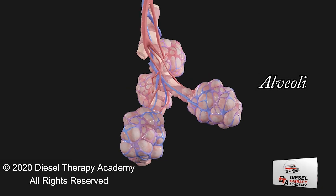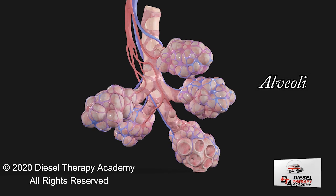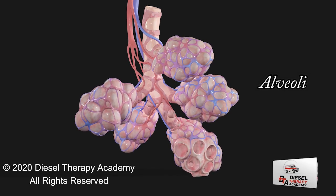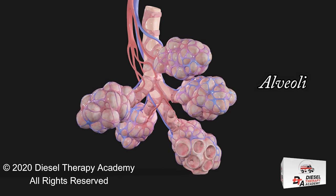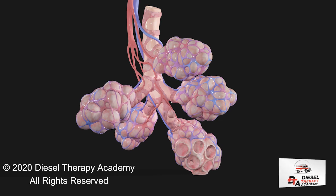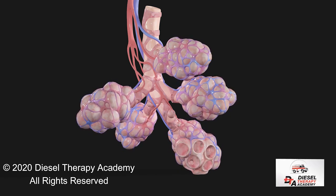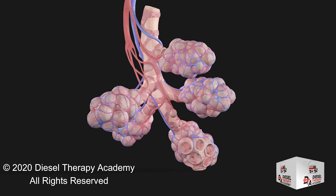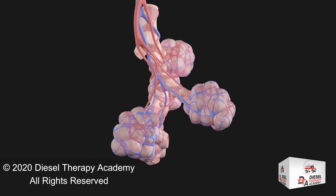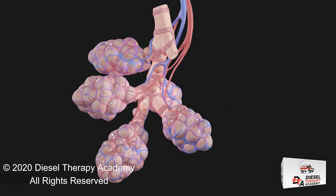Inspiration, or inhalation, is the process of taking air into the lungs. It is the active phase of ventilation because it is the result of muscle contraction. During inspiration, the diaphragm contracts and the thoracic cavity increases in volume. This decreases the intra-alveolar pressure so that air flows into the lungs. We breathe in through negative pressure.